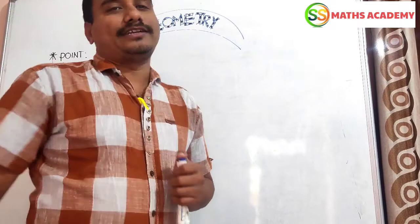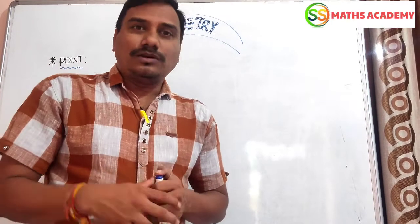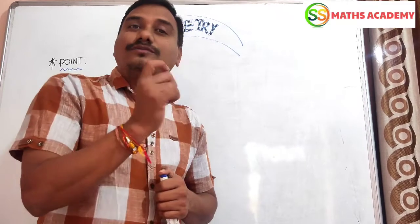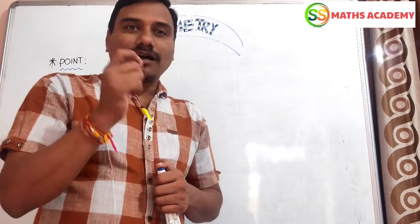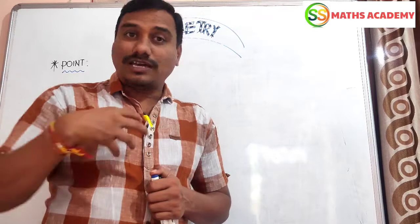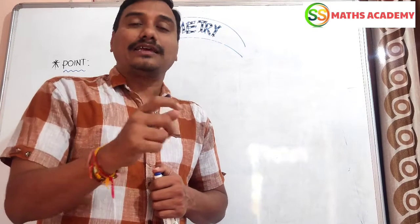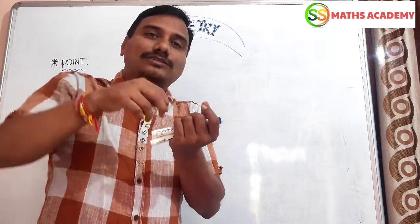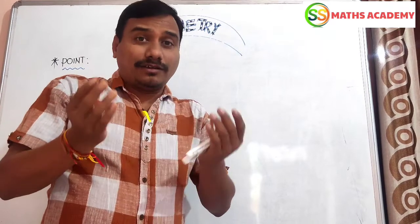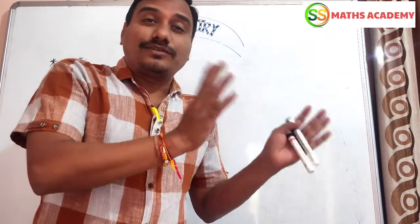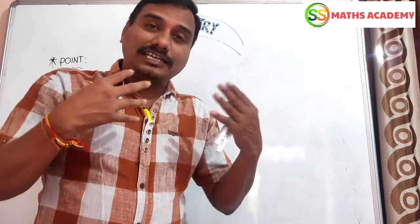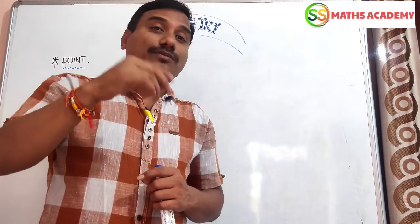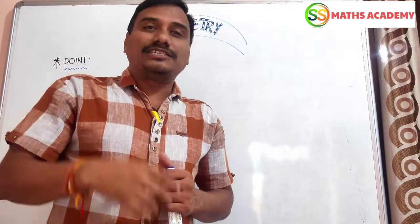First of all, we should know what is geometry. Geometry is a combination of two Greek words: 'geo' and 'metron.' Geo means earth — we are living on it — and metron means measurement. Simply, we can say that measurement of the earth is called geometry. Geometry is not a separate system; it is linked with our human life and is all around us.